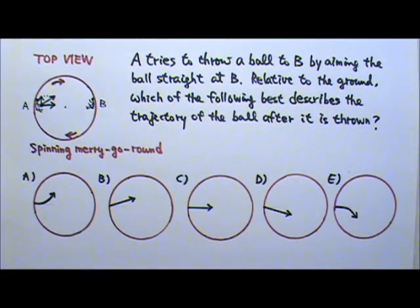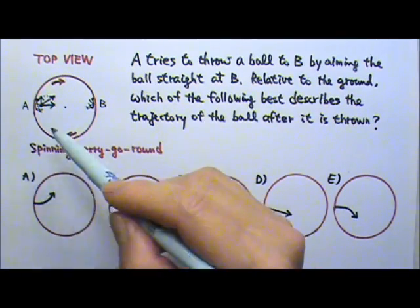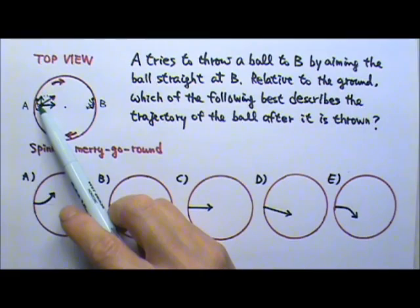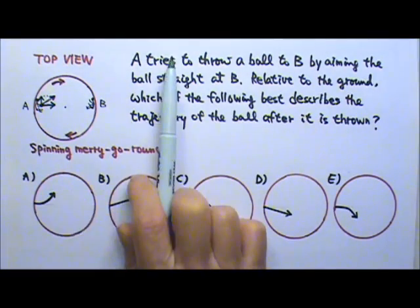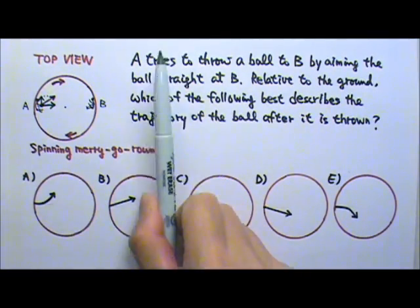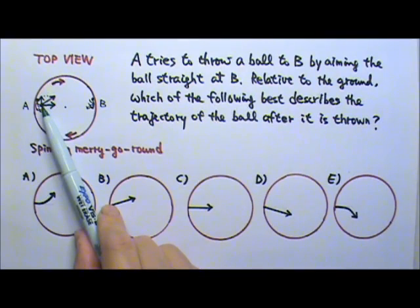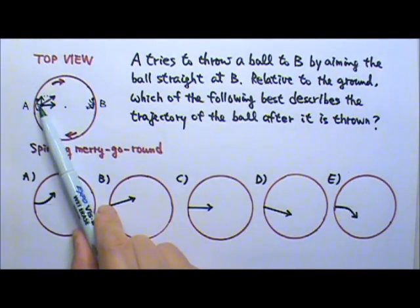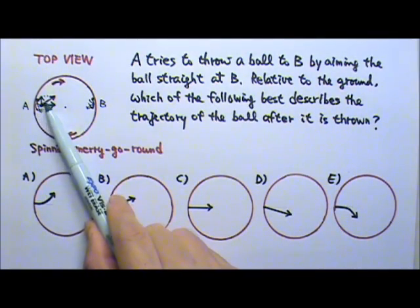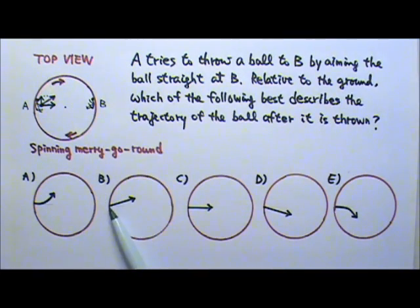And after the ball leaves A's hand, it experiences only gravity in the vertical direction. There is no force acting on the ball in the horizontal direction. So in the horizontal direction, the ball is just going to travel at a constant velocity, which means constant velocity along a straight line. So the answer is B.